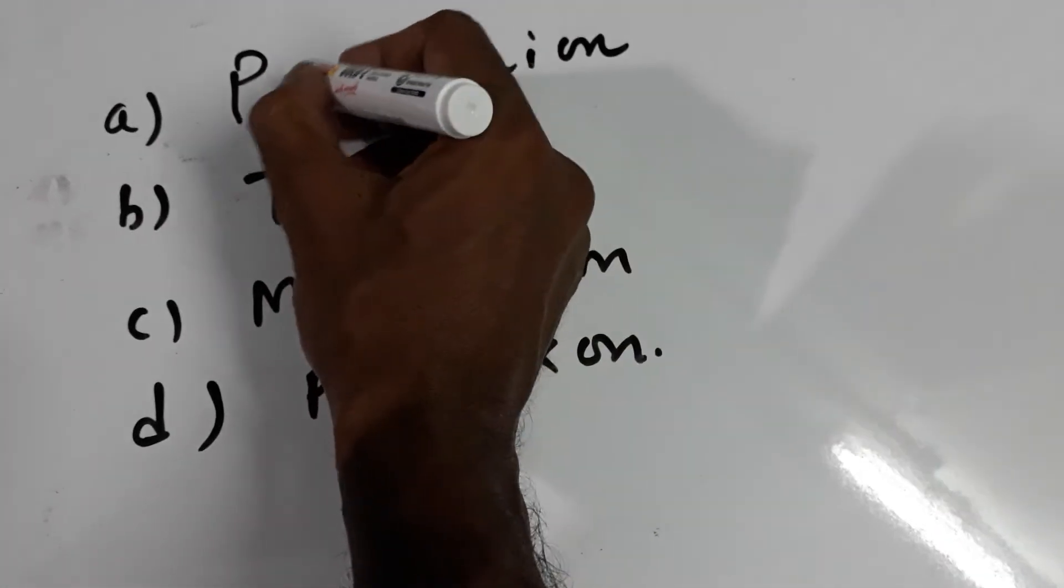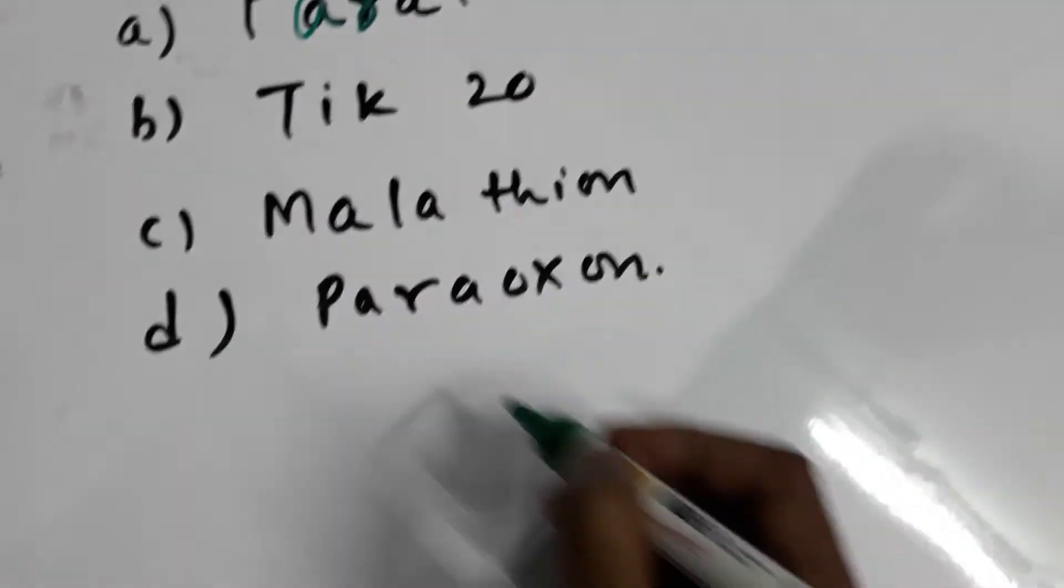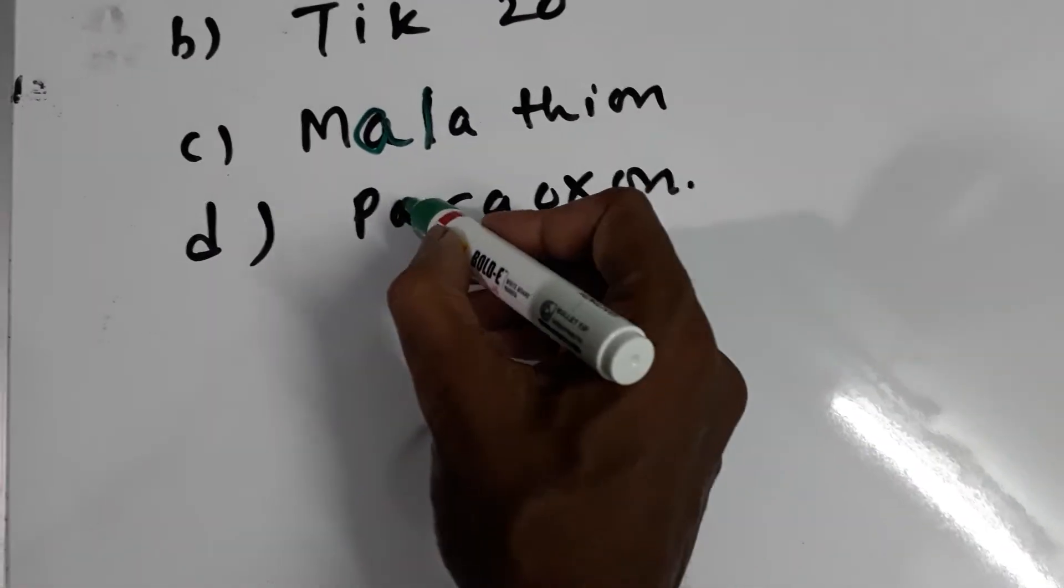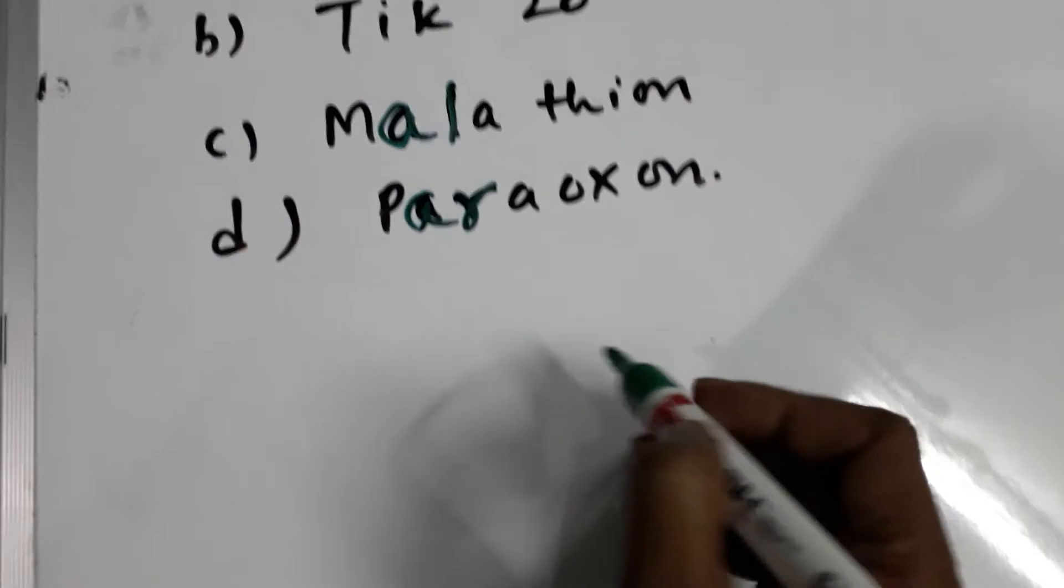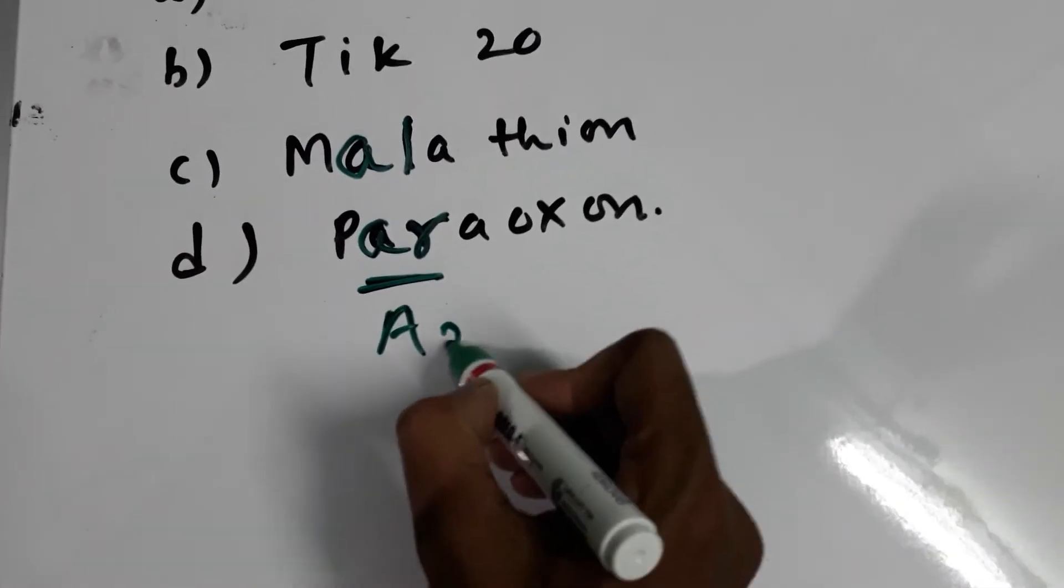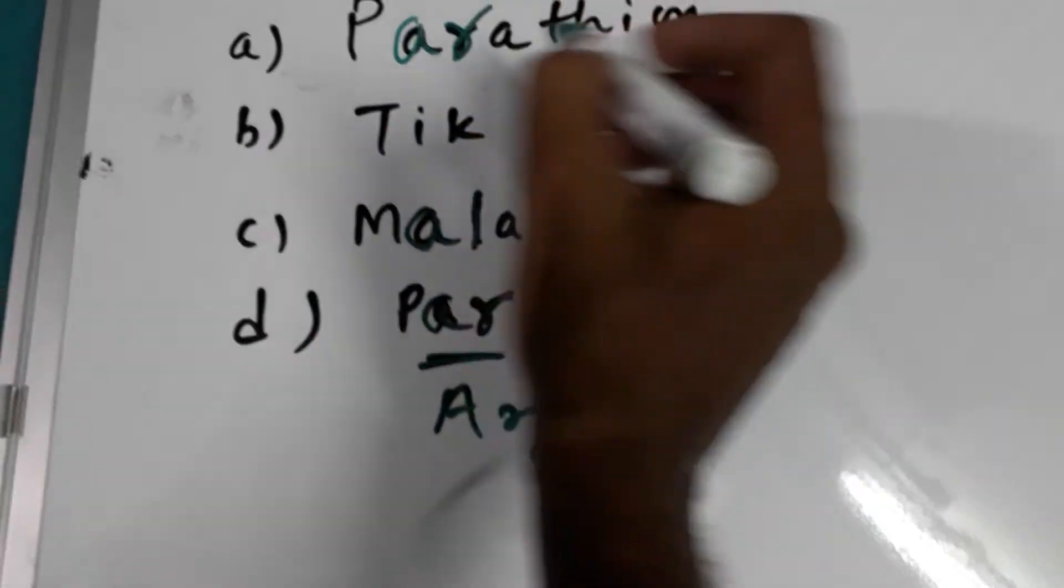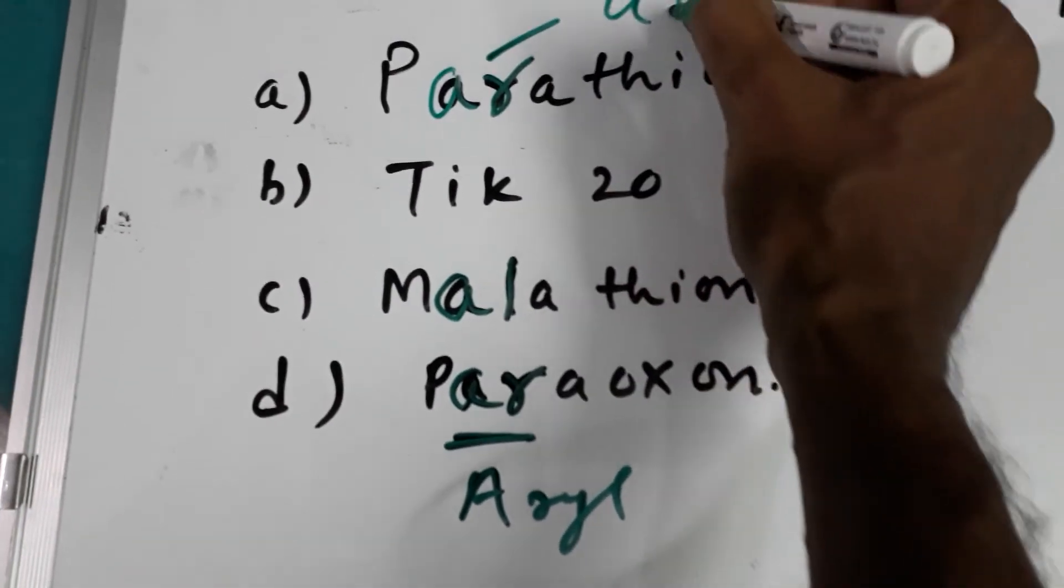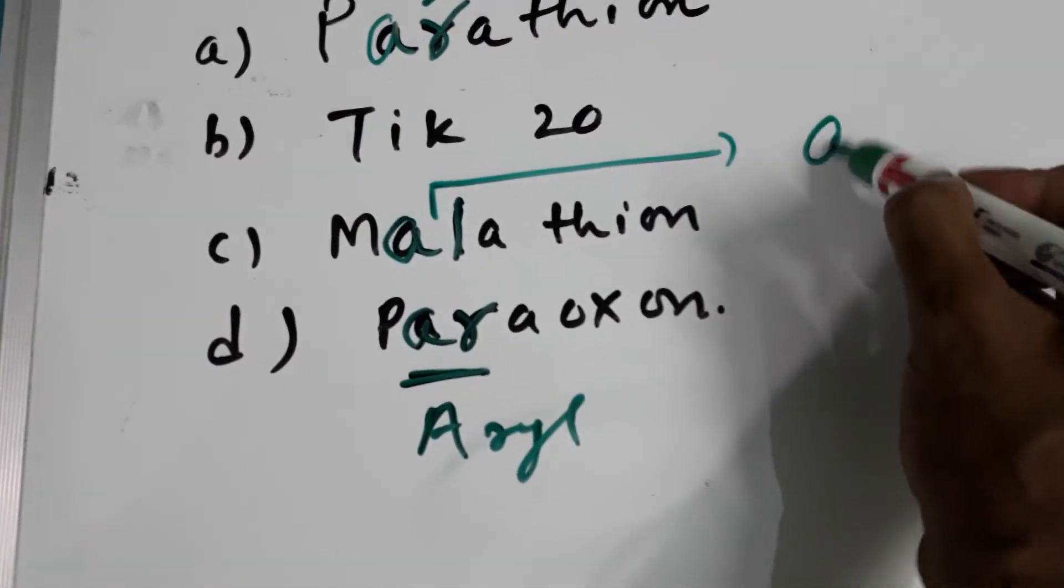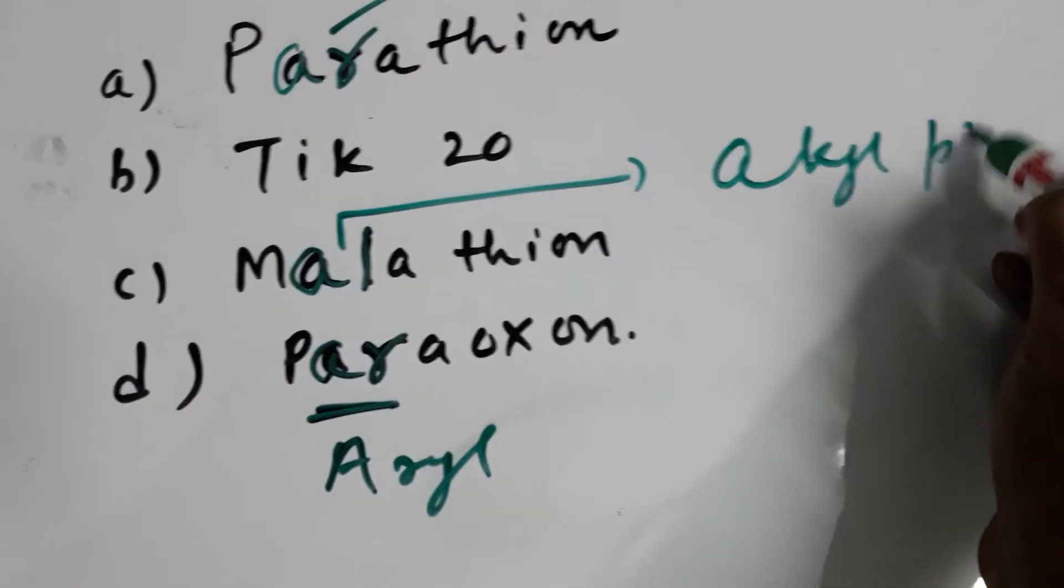In Parathion, AR is there. In Malathion, AL is there. In Paraoxon, AR is there. So, Parathion is Aryl group, Paraoxon is Aryl group, and Malathion is Alkyl-phosphate group.